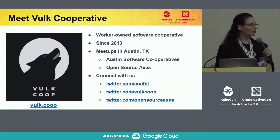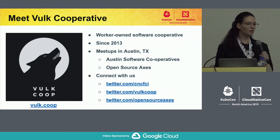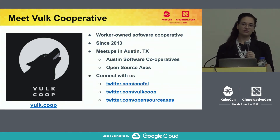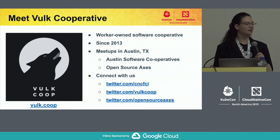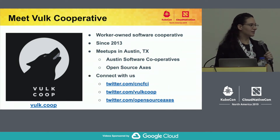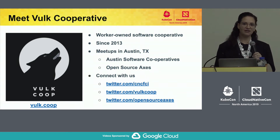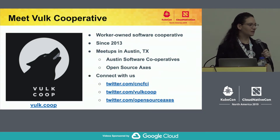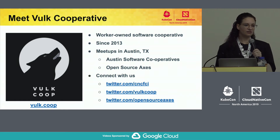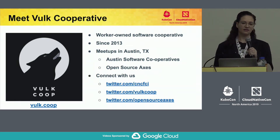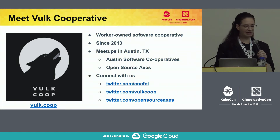A little bit about Vault Cooperative. We are a software cooperative in business since 2013. We are based out of Austin, Texas, and have folks working with us from all around the world. In Austin, Texas, we lead two meetups: the Austin Software Cooperatives meetup and the open source axe-throwing meetup.